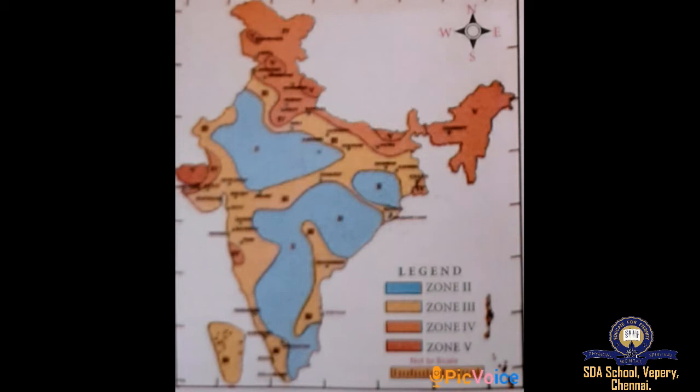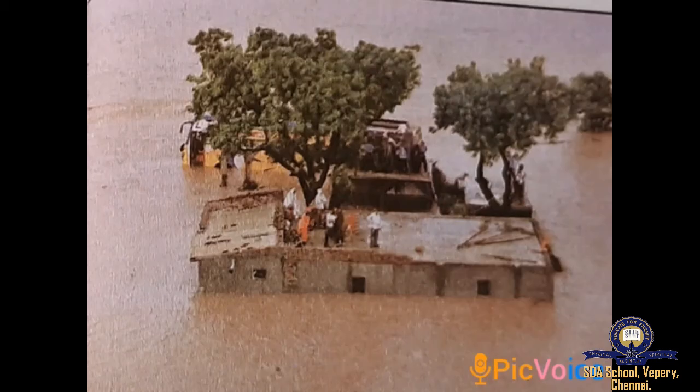Zone 3 — moderate risk — regions include Kerala, Goa, Lakshadweep Islands, remaining parts of Uttar Pradesh, Gujarat, and West Bengal, Punjab, Rajasthan, Bihar, Maharashtra, Andhra Pradesh, Tamil Nadu, and Karnataka. Seismic Zone 2 — low risk — covers the remaining parts of the country.